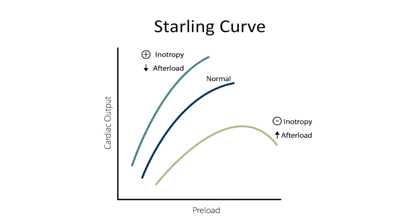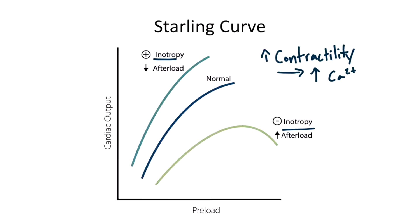Now that you understand the normal curve, let's explain the other two curves. Recall from section 3 that inotropism, or inotropy, refers to changes in contractility. We can see positive inotropy and negative inotropy here. Remember, contractility is directly related to the concentration of intracellular calcium. If there's increased contractility, this means there's increased cytosolic calcium. If more calcium is available, then more troponin C is able to move tropomyosin from the actin sites, which means more myosin can bind actin, resulting in a more forceful contraction.